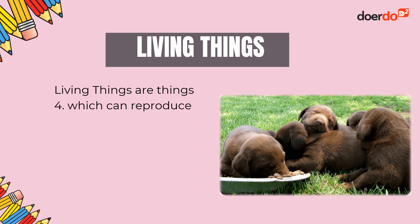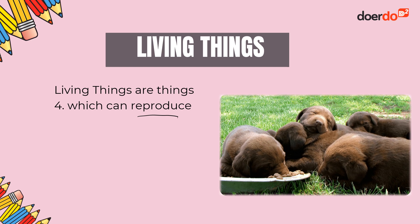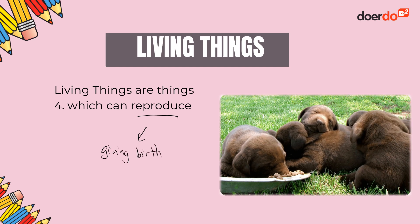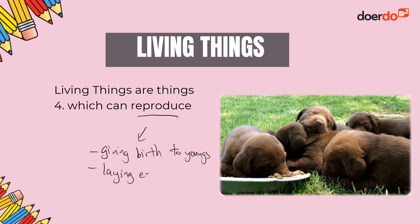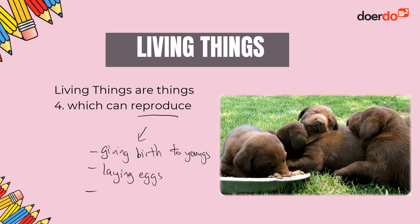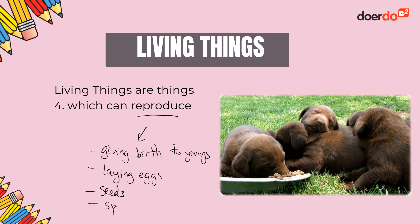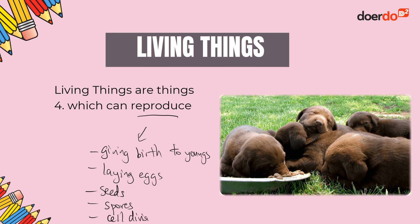Fourth, living things are things which can reproduce. You see the dogs over here — they give birth to puppies, so they are reproducing. Reproduction can be in the form of giving birth to young or laying eggs for animals. Plants reproduce through seeds, which grow into new plants. Fungi use spores, and bacteria use cell division. There are different ways of reproduction, but all living things will reproduce.